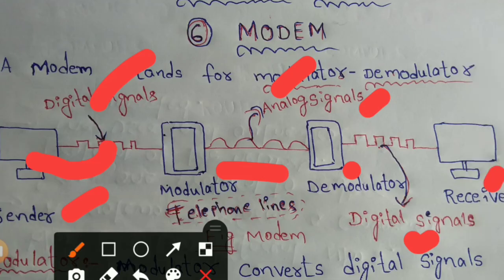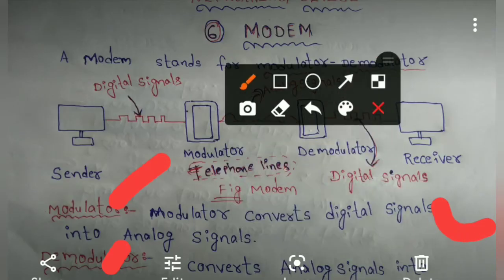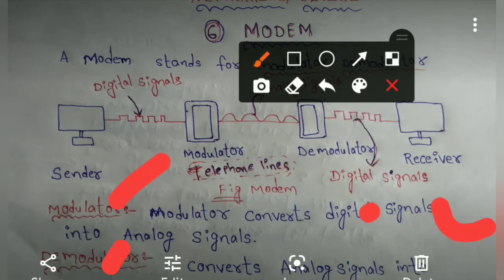This is the main purpose of the modem. The Modulator converts digital signals into analog signals, and the Demodulator converts analog signals into digital signals.